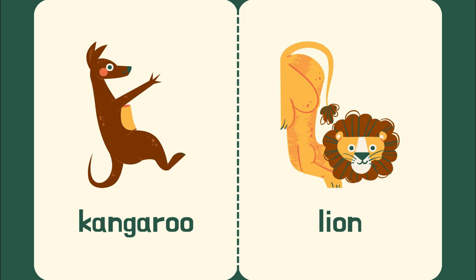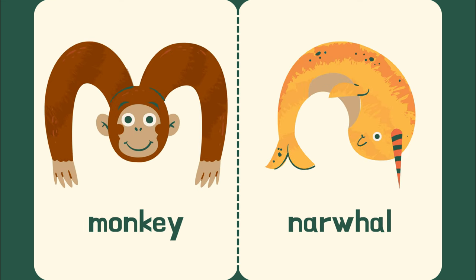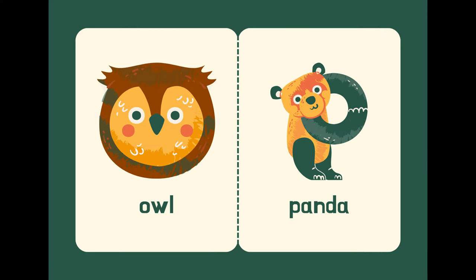K is for kangaroo. L is for lion. M is for monkey. N is for narwhal. O is for owl.